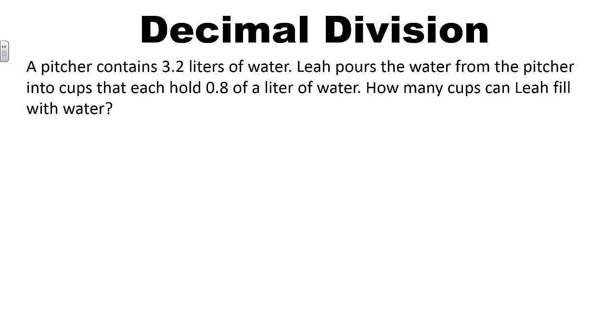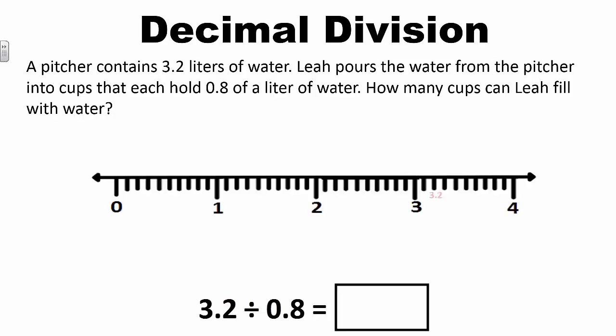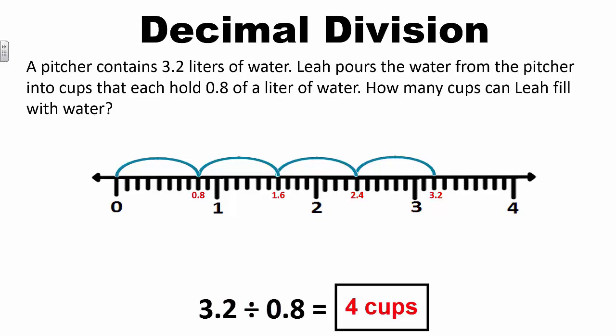Students can also represent division problems on a number line. For example: a pitcher contains 3 and 2 tenths liters of water. Leah pours the water into cups that each hold 8 tenths of a liter. How many cups can Leah fill? I need to find 3 and 2 tenths divided by 8 tenths. On the number line, I continue to show 8 tenths in each group until the pitcher is empty. Counting the total number of groups on the number line, I see that 4 cups can be filled with 8 tenths liter of water.